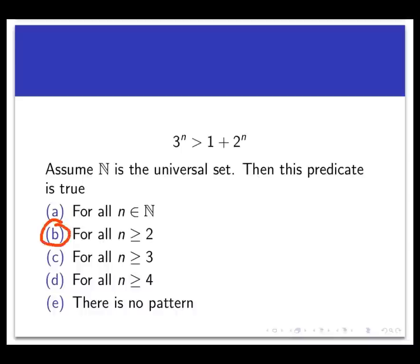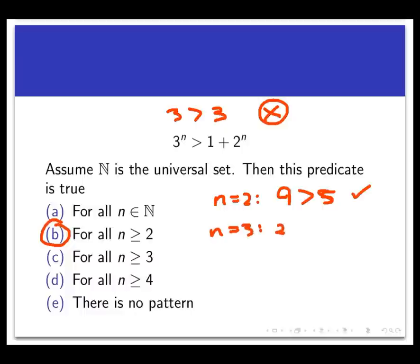It doesn't take much playing around to see that answer b is right. If n=1, we get 3 on the left and 1+2=3 on the right, making p(1) false since 3 is not strictly bigger than 3. If n=2, we get 3²=9 on the left and 1+2²=5 on the right, so p(2) is true. If n=3, we get 27 on the left and 1+2³=9 on the right, so p(3) is true. If n=4, we get 81 on the left and 1+2⁴=17 on the right, so p(4) is true.